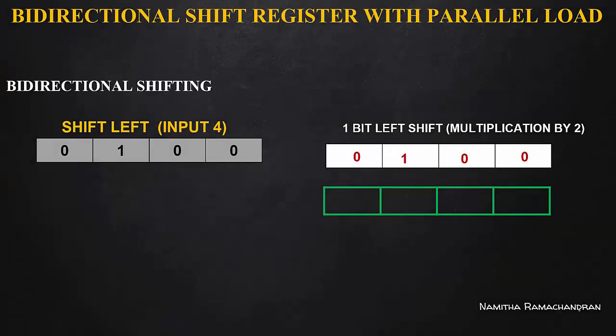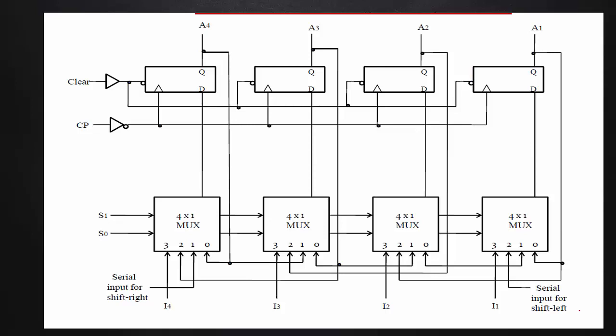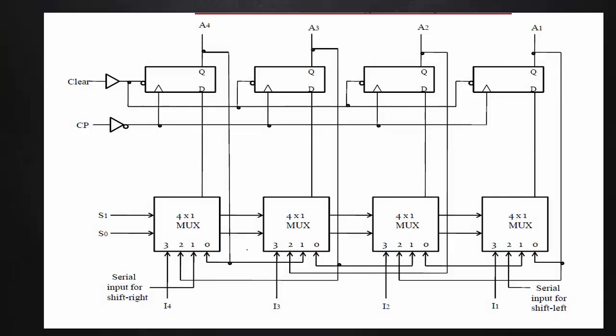Any bidirectional shift register with parallel load. A bidirectional shift register — we can shift left and right, we can do bidirectional shifting. A bidirectional shift register with the help of a multiplexer — 4-by-1 multiplexers; four 4-by-1 multiplexers are used.